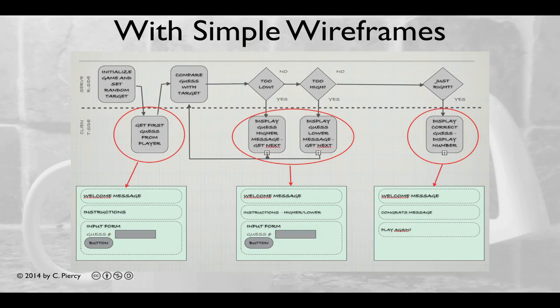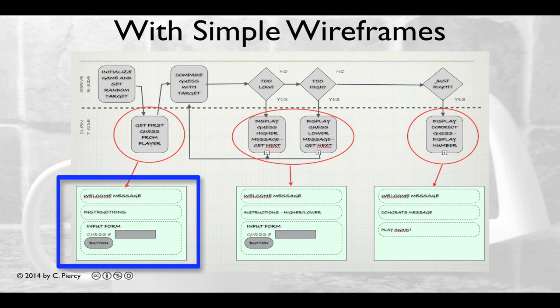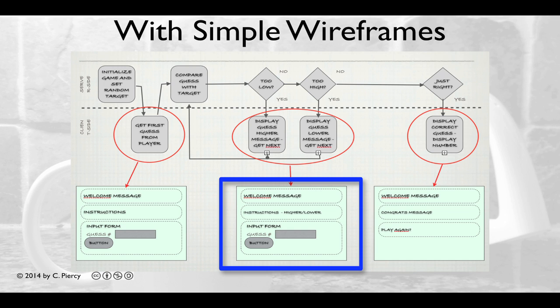Let's take a quick look at what the player will see with some simple wireframes. On the first guess view, we'll include a welcome message, some instructions, and an input form that will include a text box to get the guess and a button to submit the guess. Similarly, when a guess is incorrect, we'll include the welcome message again, instructions and a message saying to guess higher or lower, along with the same input form.